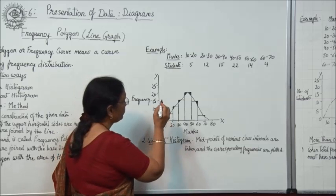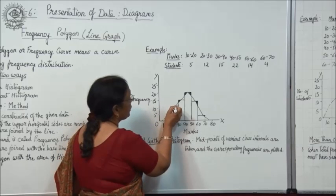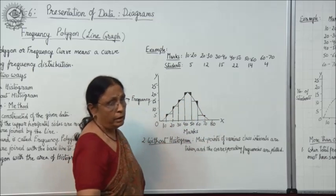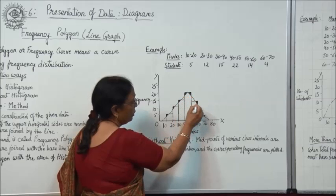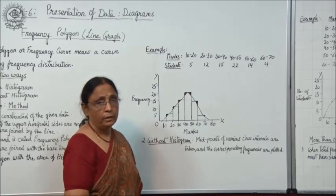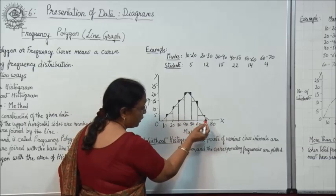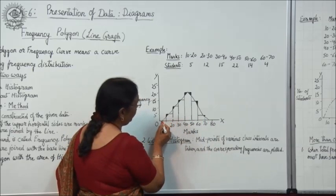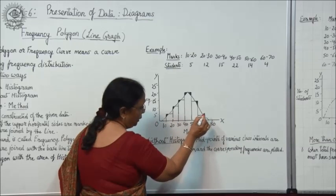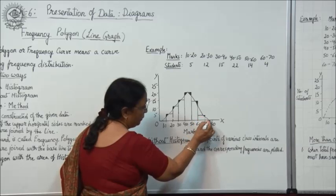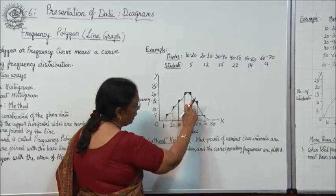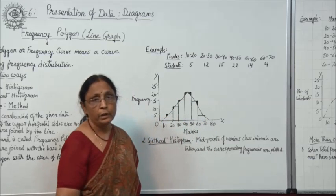The next step is to take the midpoints of each rectangle and join those midpoints with the help of a straight line or freehand curve. The endpoint on each side will be extended to the baseline — this endpoint is extended till the baseline here, and this one will be extended till the baseline on the other side — to equate the area of the histogram with the frequency polygon.